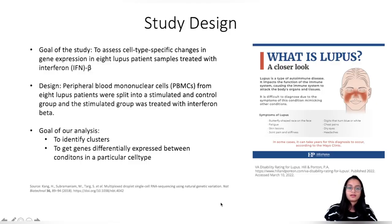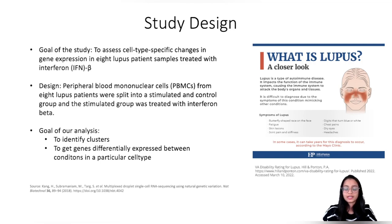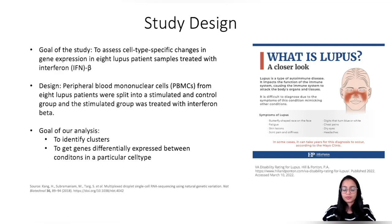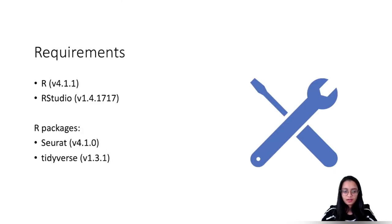Coming to the study design: we are using the same dataset from the previous video — data from eight lupus patients. These are peripheral blood mononuclear cells split into stimulated and control groups, where the stimulated group was treated with interferon beta. The goal of the study was to assess cell type-specific changes in gene expression. Our goal today is to identify clusters and find genes differentially expressed between samples treated with interferon beta and the control group in a particular cell type. Requirements: we will use Seurat for marker functions and tidyverse for data manipulation.